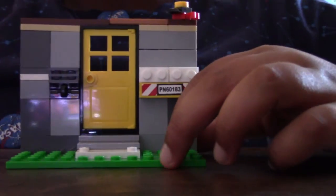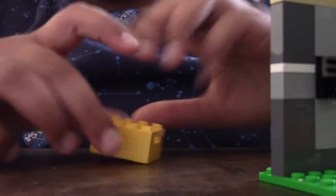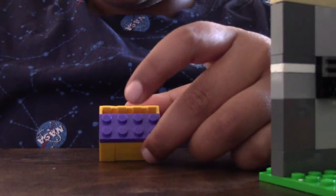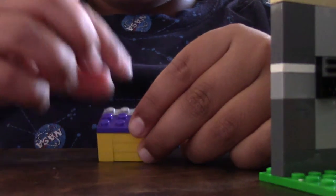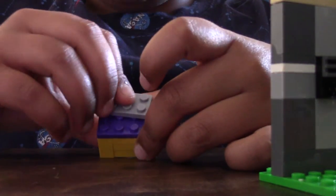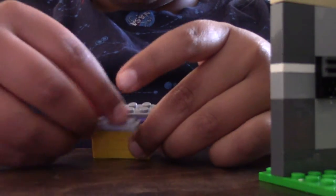Now let's make the present. You're gonna add a 1x2, a 2x4 and a 1x4. Then another 2x4 to connect them together and another 1x4.